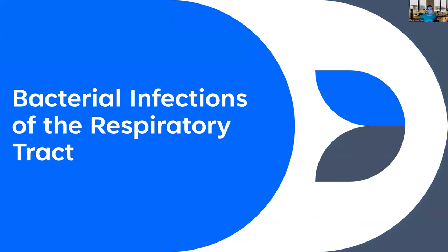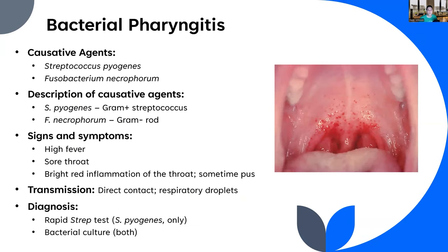Let's start with bacterial infections of the respiratory tract. The first one we'll talk about is bacterial pharyngitis, commonly referred to as strep throat. While Streptococcus pyogenes is the most prevalent cause of bacterial pharyngitis, there are other bacteria that can cause it — most notably Fusobacterium necrophorum. Streptococcus pyogenes is a gram-positive streptococcus, and Fusobacterium necrophorum is a gram-negative rod.